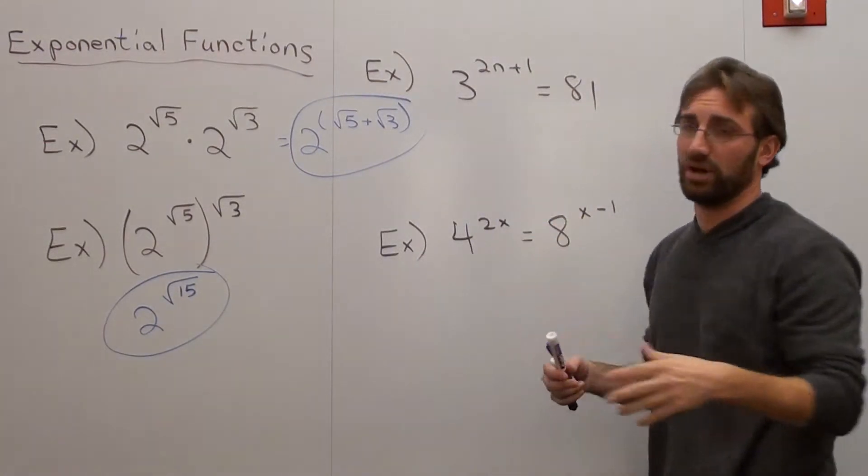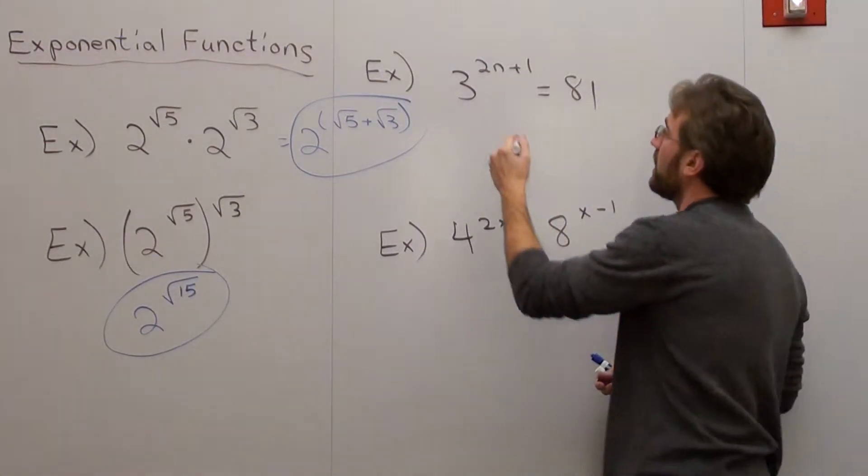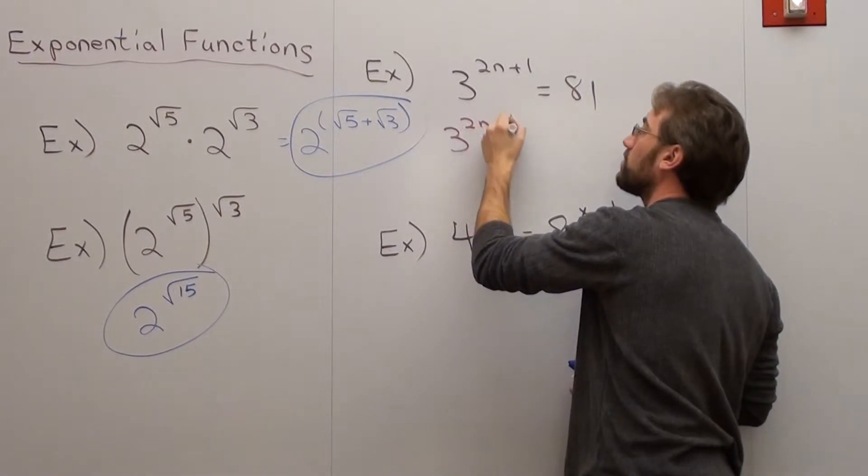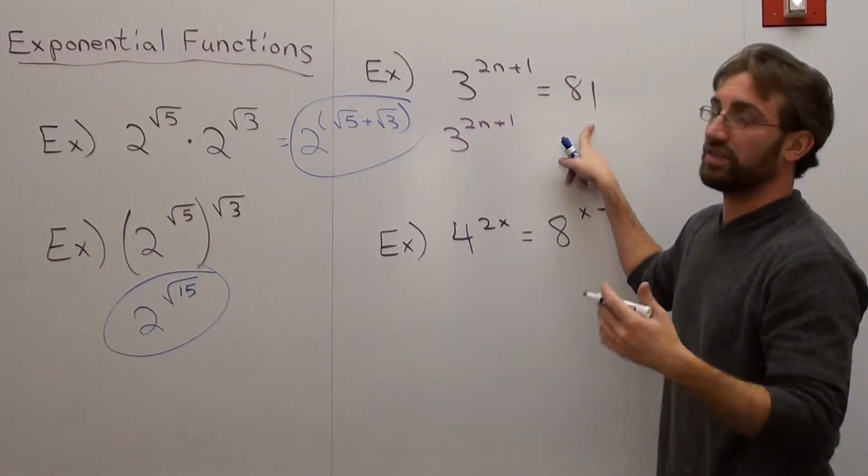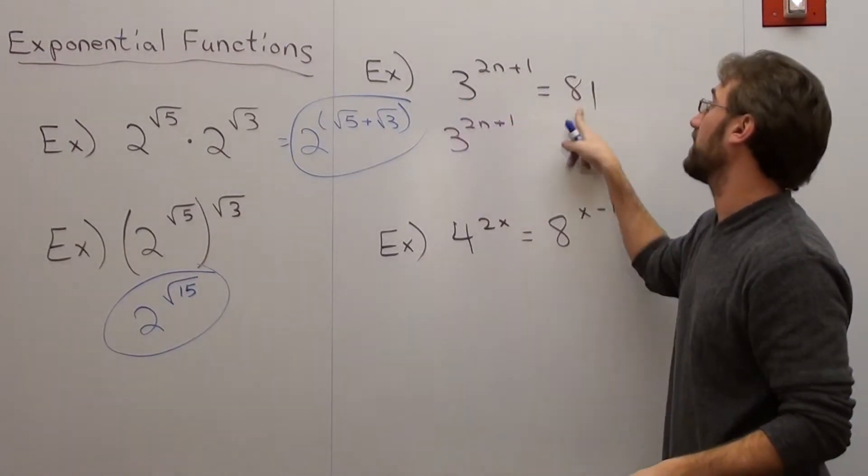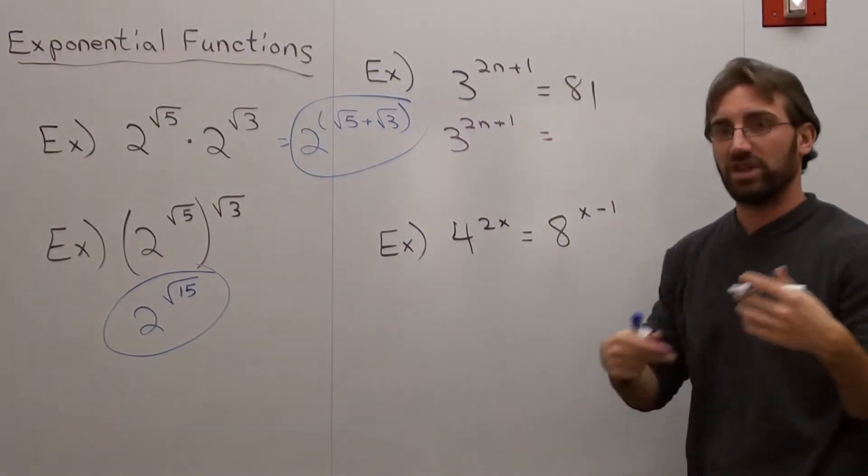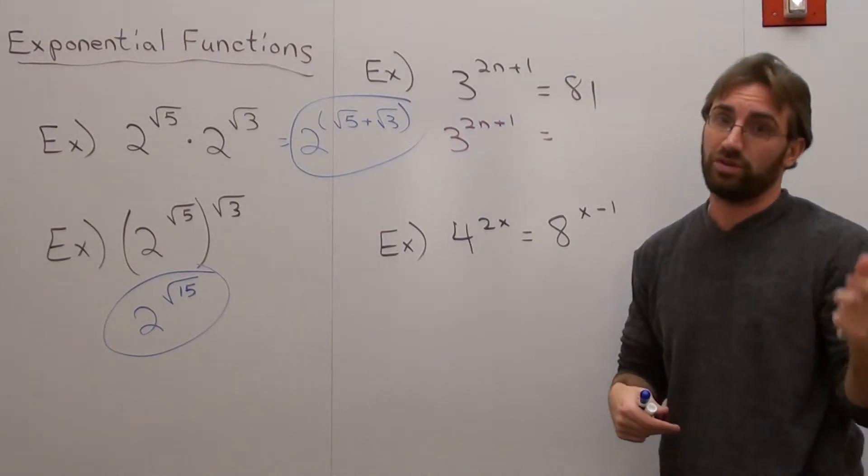3 to the 2n equals 81, if you want to solve it properly, is 3 to the 2n plus 1. The reason why you can't solve this is because the bases of this equation are the same. This is a 3 and this is an 81. 81 is the same thing as 3 to the 4th.